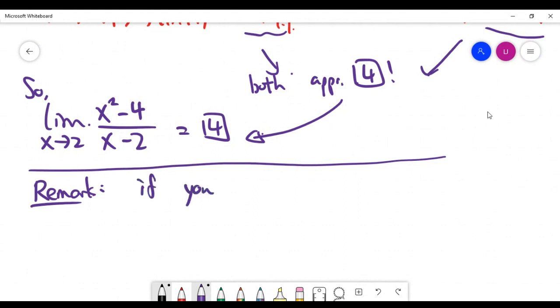So this is the first remark: if you approach 2 from two different directions. By two different directions, I'm talking about the fact that you can approach 2 by using values less than 2.